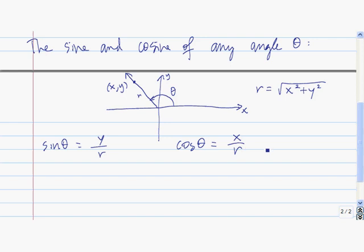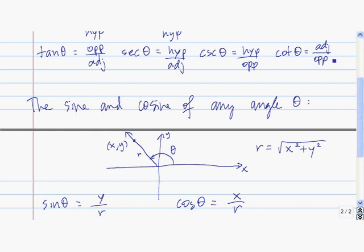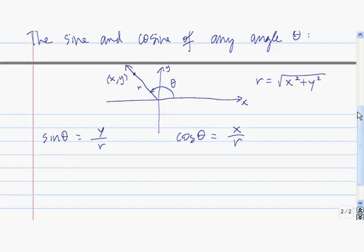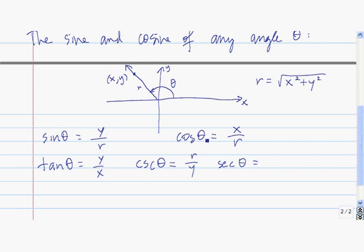In the same way, we can extend the definitions of the four remaining trig functions. The tangent of theta equals the opposite side over the adjacent side, so that's the y coordinate divided by the x coordinate. The cosecant of theta is the reciprocal of sine, so that's r divided by y. The secant of theta is the reciprocal of cosine, so that's r divided by x. And the cotangent of theta is the reciprocal of the tangent, so that's x divided by y.